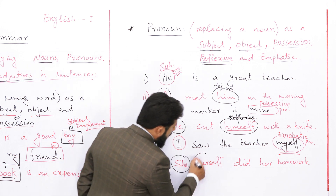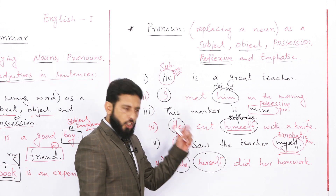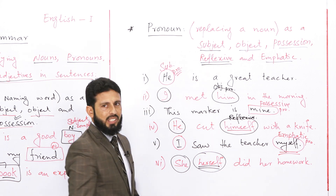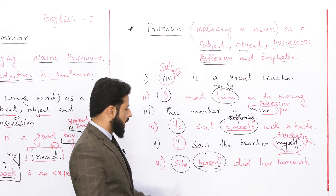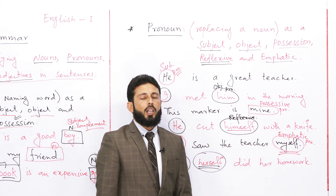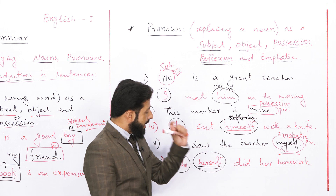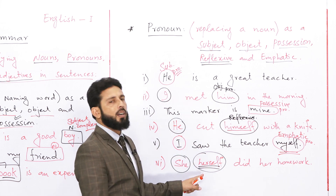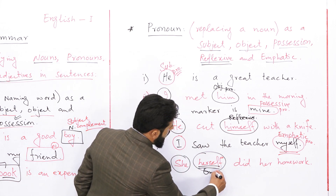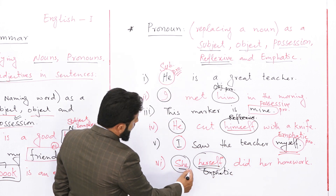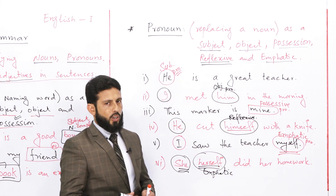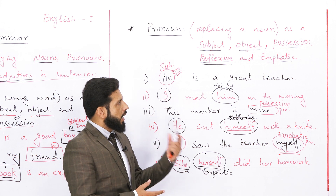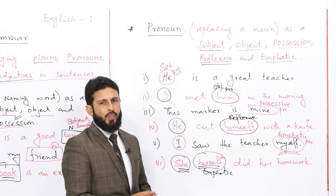'She herself did her homework'۔ اگر 'herself' ہٹا دوں تو 'She did her homework' — sentence بچتا ہے۔ لیکن 'she herself did her homework' کا مطلب ہے اس نے خود اپنا کام کیا — یہ خود کا لفظ emphatic pronoun کے لیے استعمال ہوتا ہے۔ تو 'herself' emphatic pronoun ہے اور 'she' subjective pronoun ہے۔ یہ ہو گیا pronoun کی identification۔